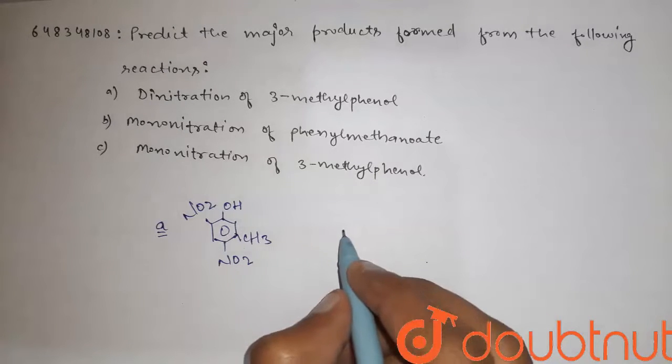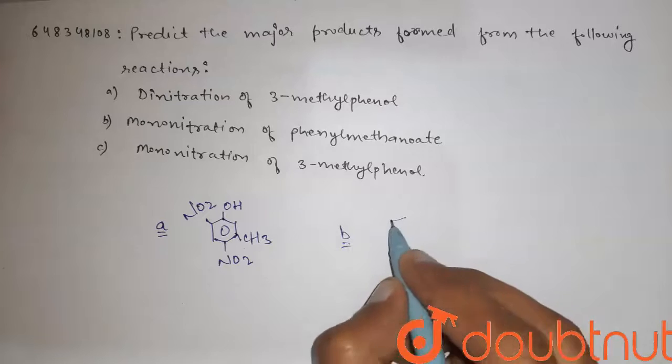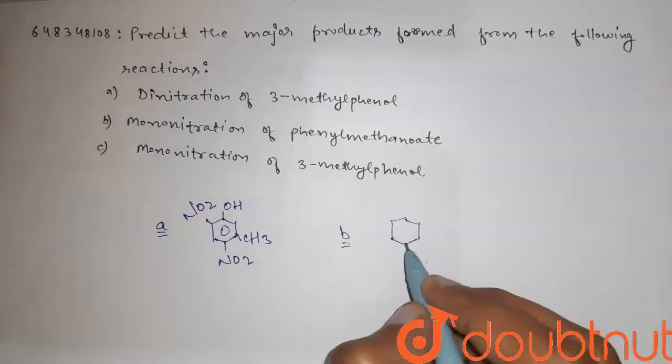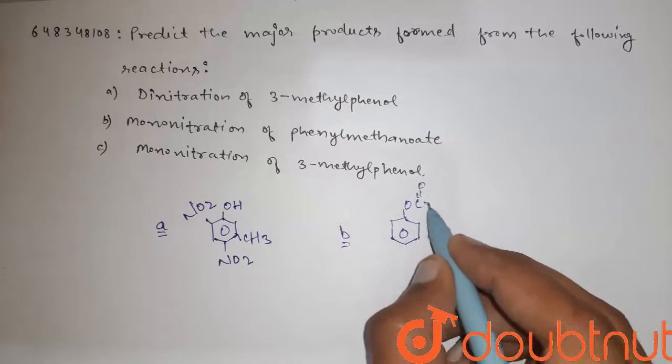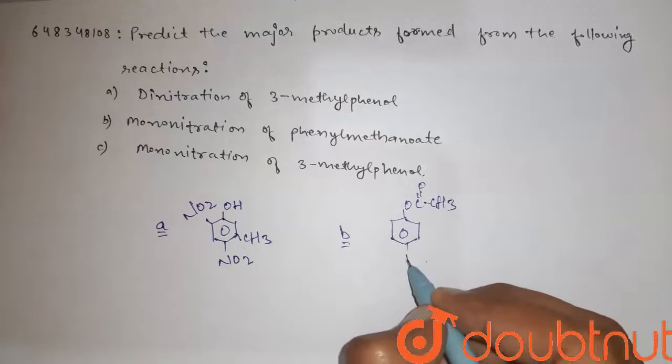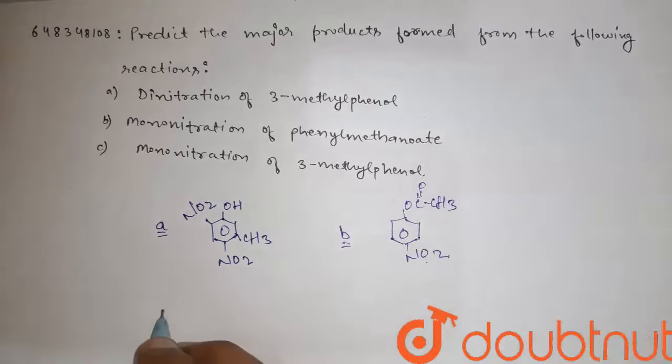And for B, mononitration of phenylmethanoate and for C, OH-CH3-NO2 and it may be ortho directing.